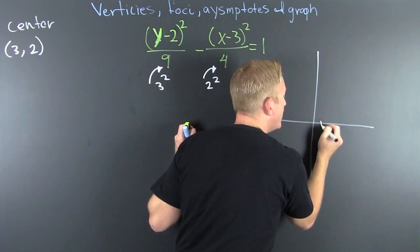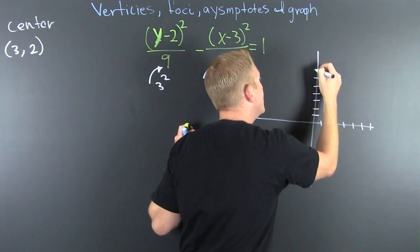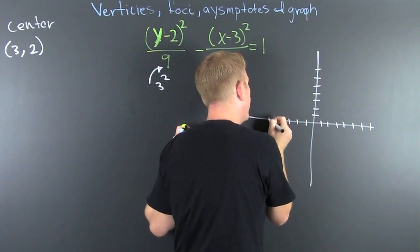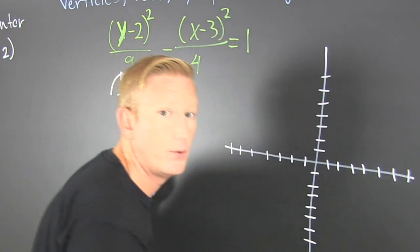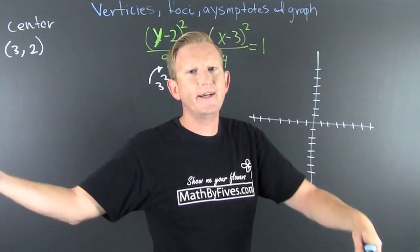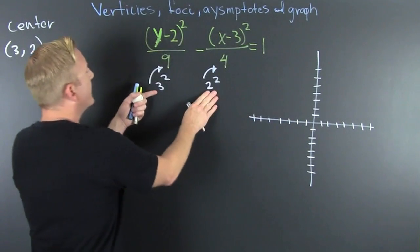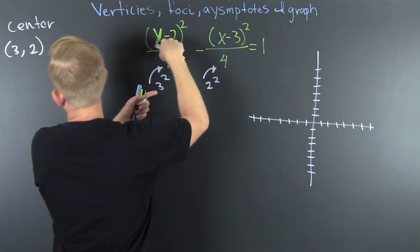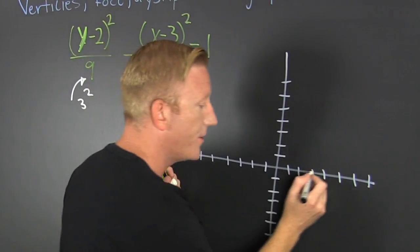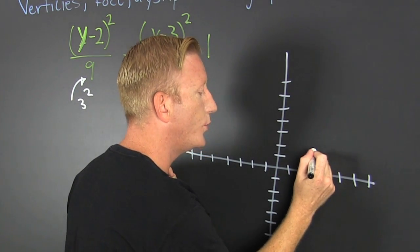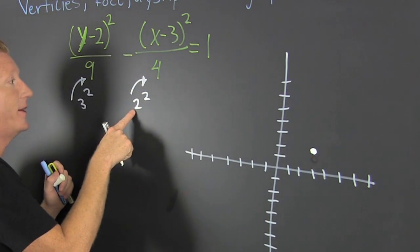So from our center at (3, 2) — and it is at (3, 2) — how far do we go in the y direction? I need to go how far in the x direction first, then the y direction.